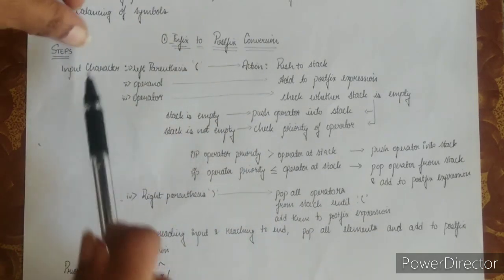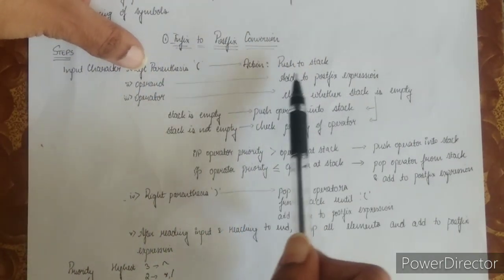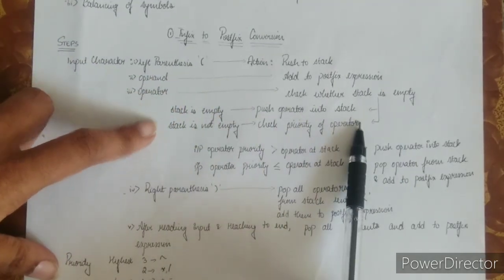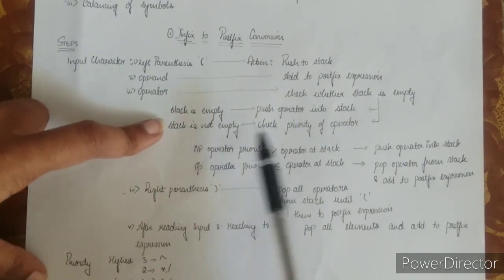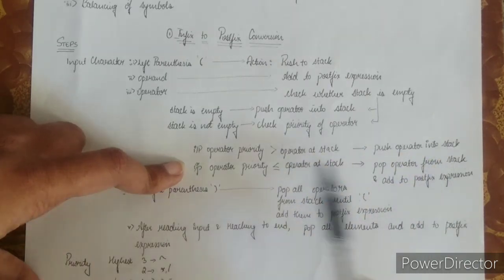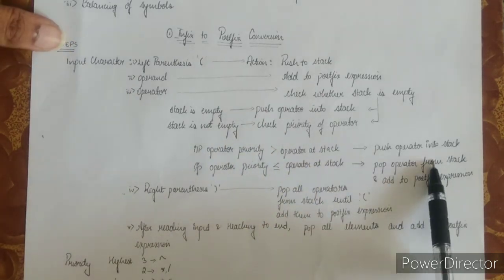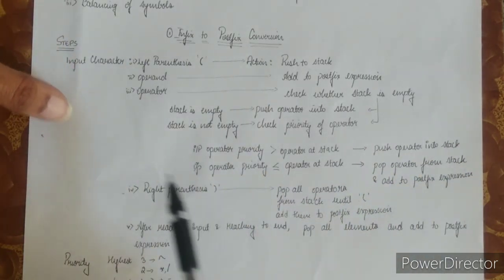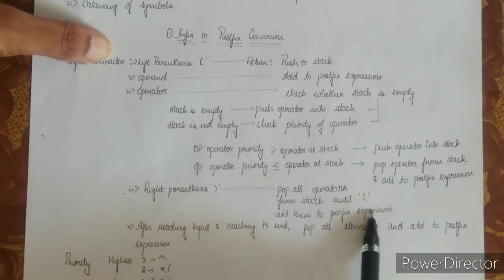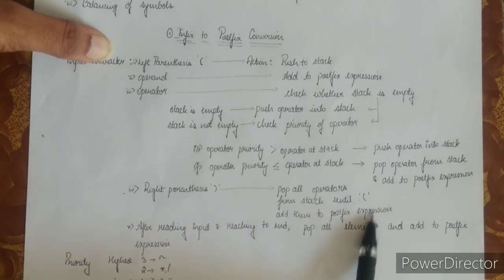Let me go through the steps once more. If the input character is a left parenthesis, push to stack. If it is an operand, add to the postfix expression. If it is an operator, check whether the stack is empty — if empty, push the operator; if not empty, check priority. If the input operator's priority is more than the operator at stack, push it. If less than or equal, pop the operator from stack and add to postfix expression. For a right parenthesis, pop all operators until you find the left parenthesis and add them to the postfix expression. At the end of input, pop all remaining elements and add to the postfix expression.